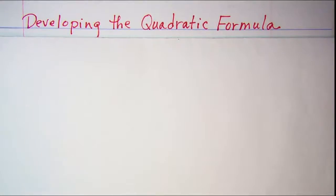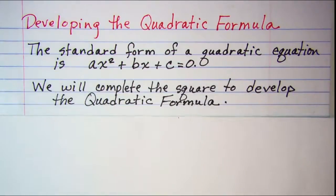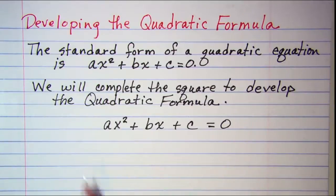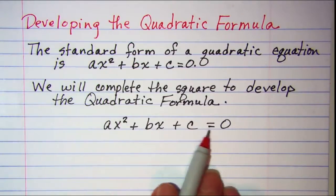In this video we will be developing the quadratic formula. The standard form of a quadratic equation is ax squared plus bx plus c equals zero. We will complete the square to develop the quadratic formula, starting with ax squared plus bx plus c equals zero.